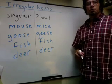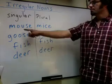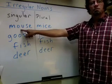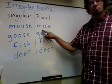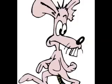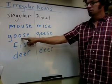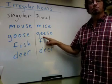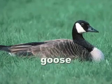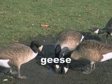Many nouns describing animals are irregular. In the singular form, mouse becomes mice. One mouse. Two mice. Goose becomes geese. Goose. Geese.